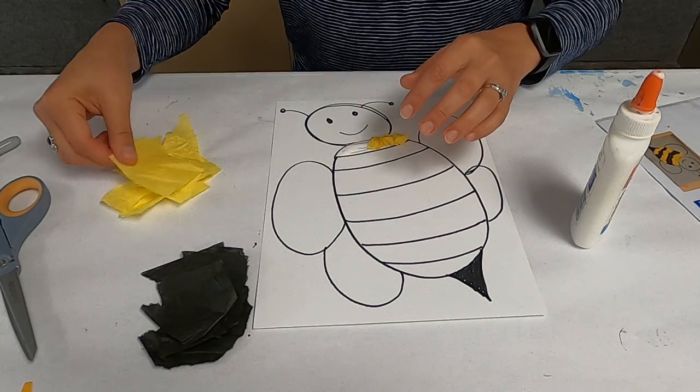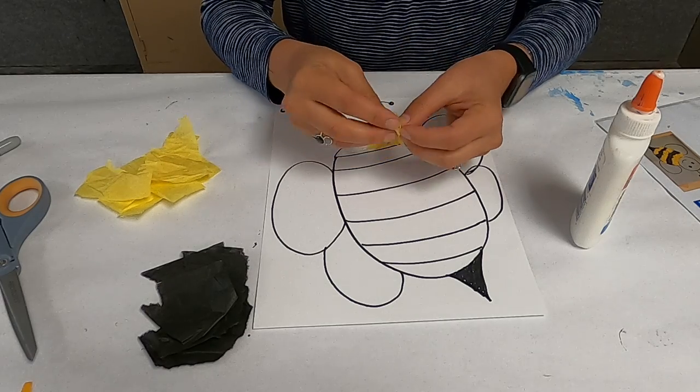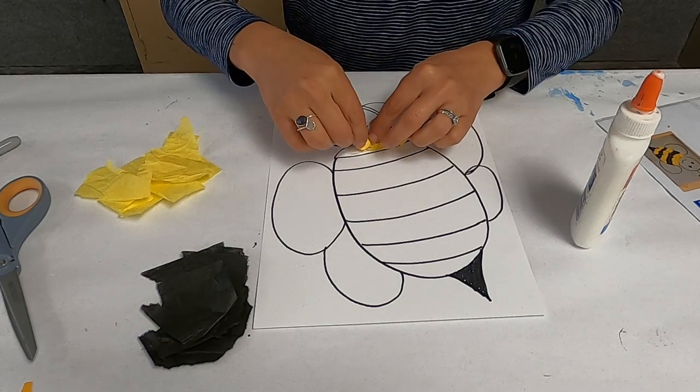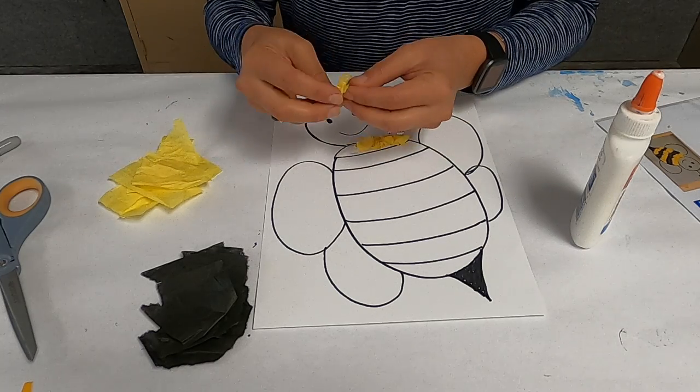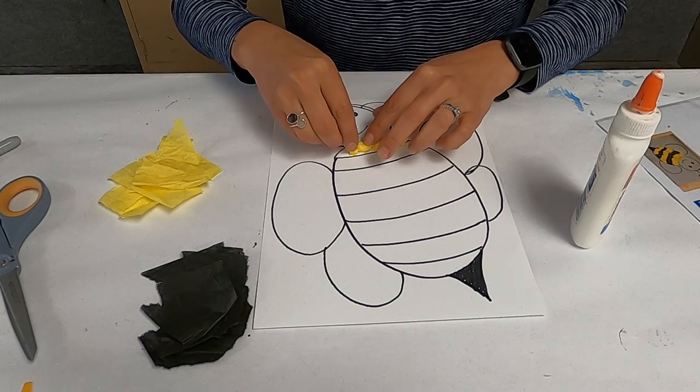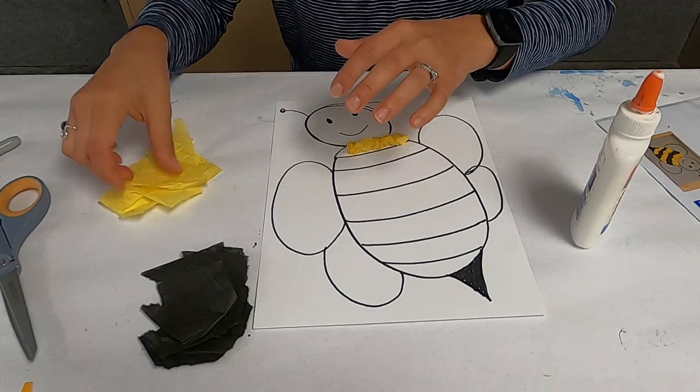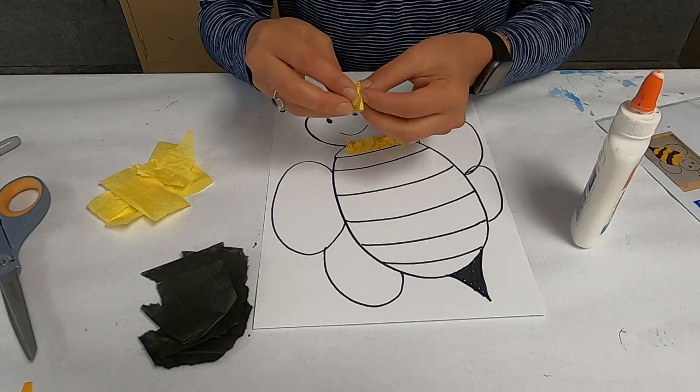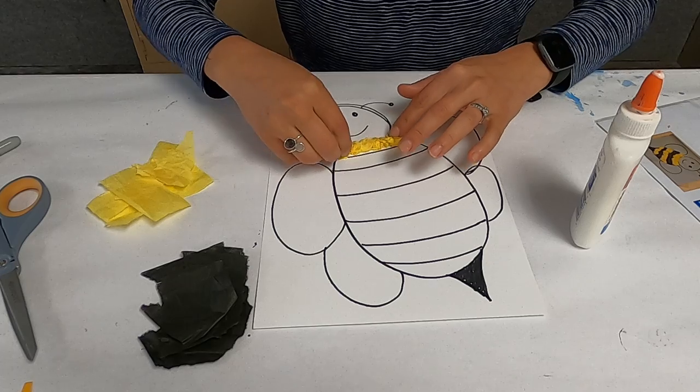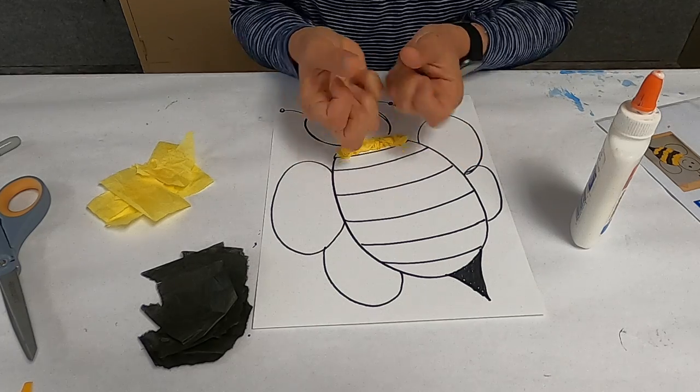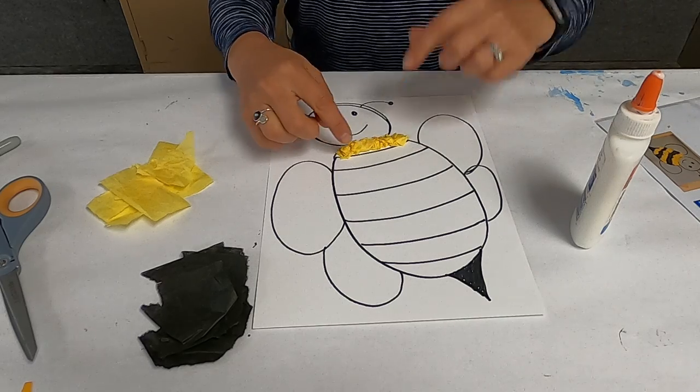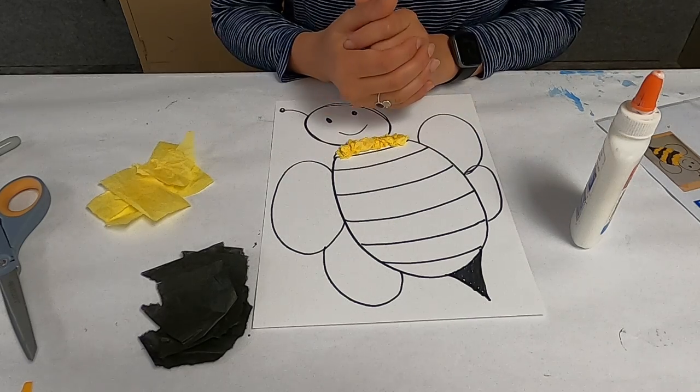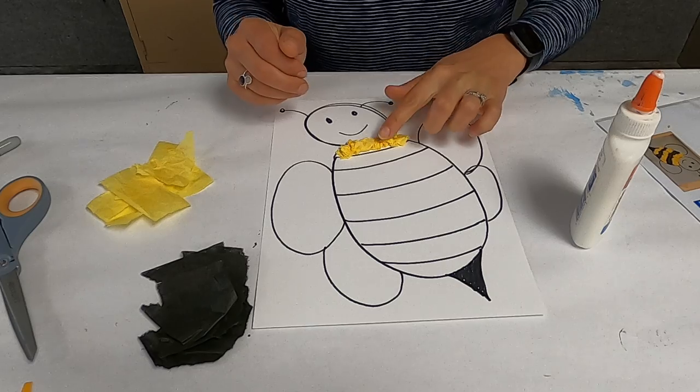You keep going until you've filled up that line. If you want to do less, make your lines a lot bigger or a smaller bee. There's really no wrong way to do this. We're just focusing on getting those fingers moving and crumpling the tissue paper and just making sure we have our bumblebee stripes, which is yellow, black, yellow, black.